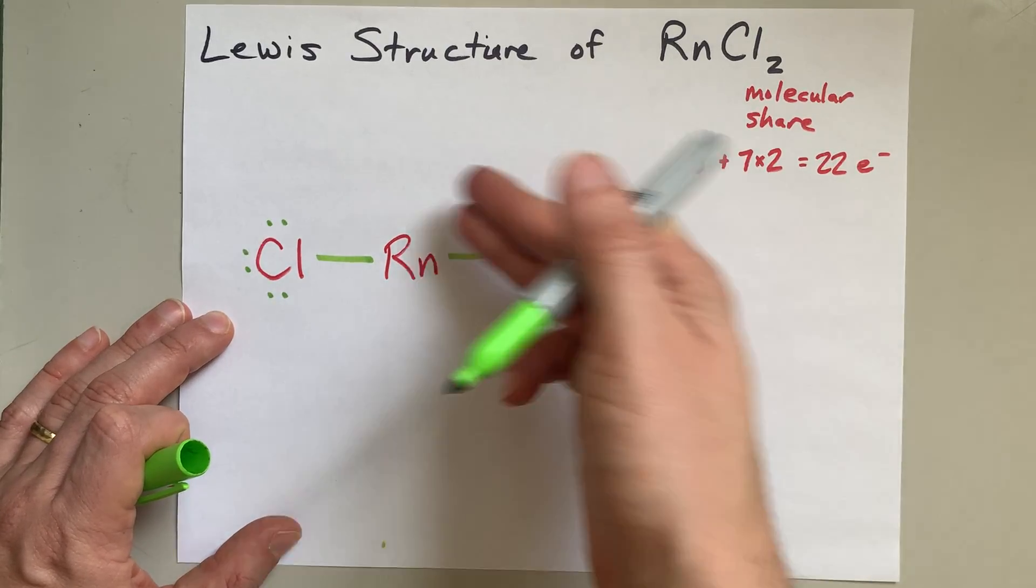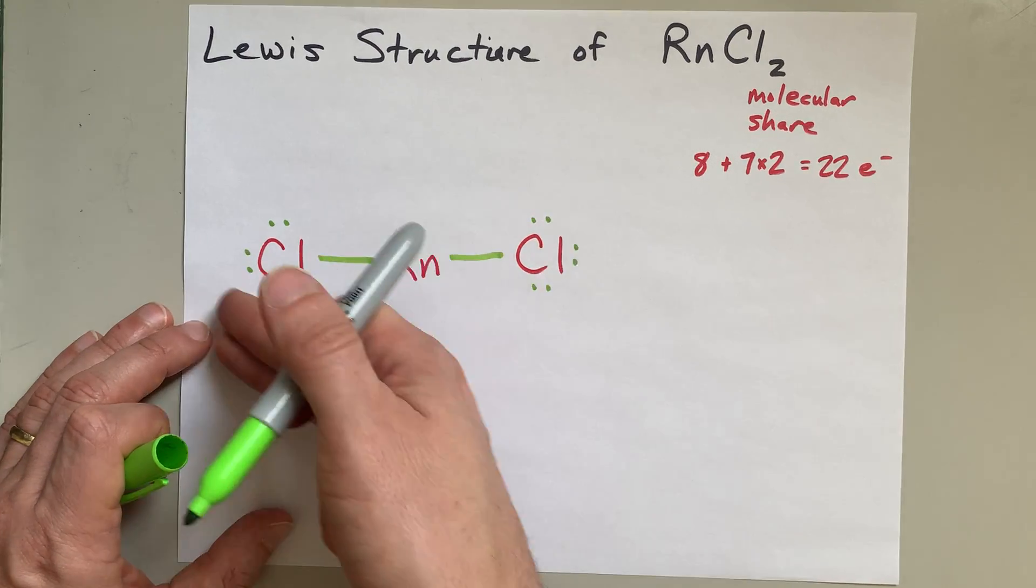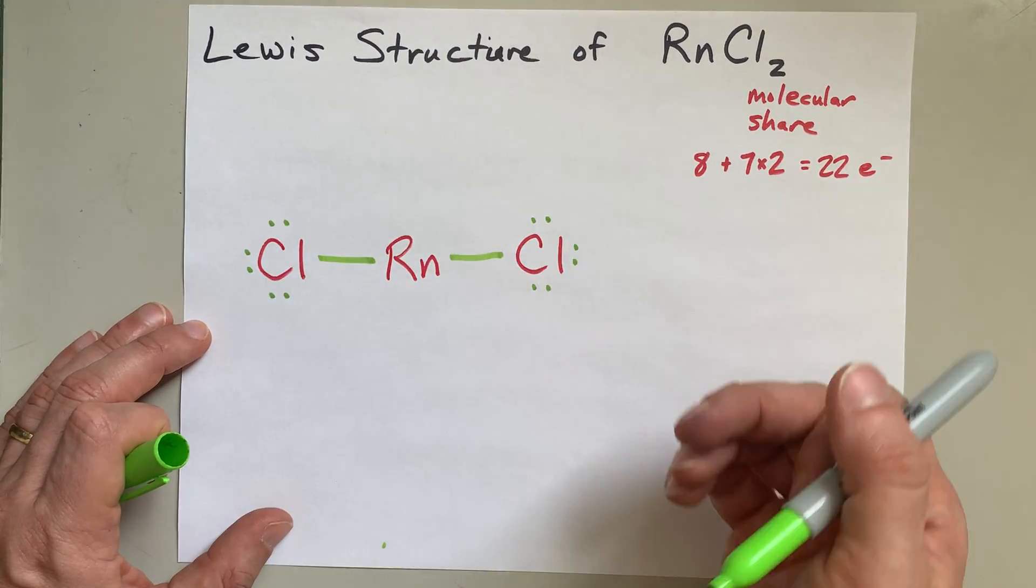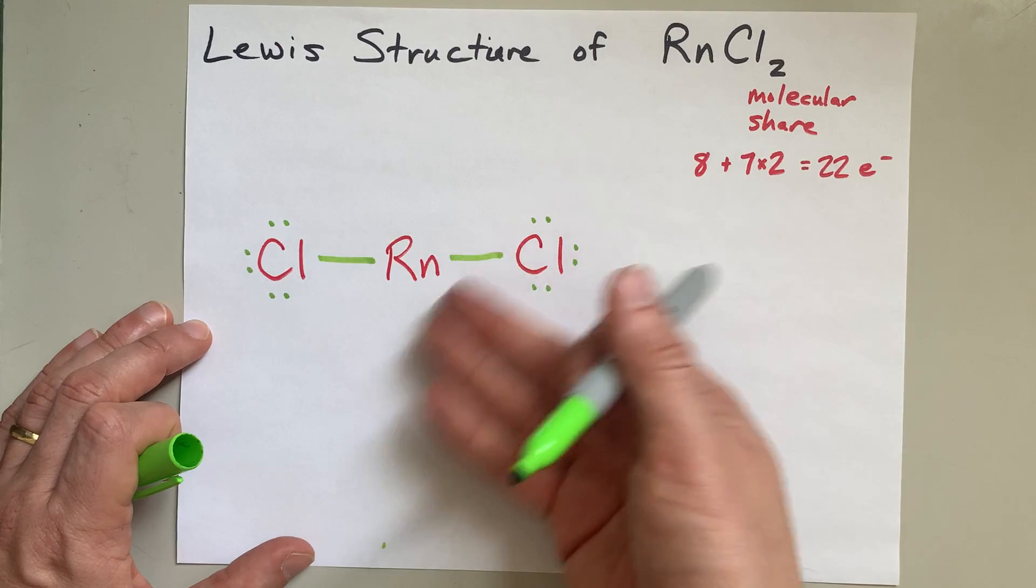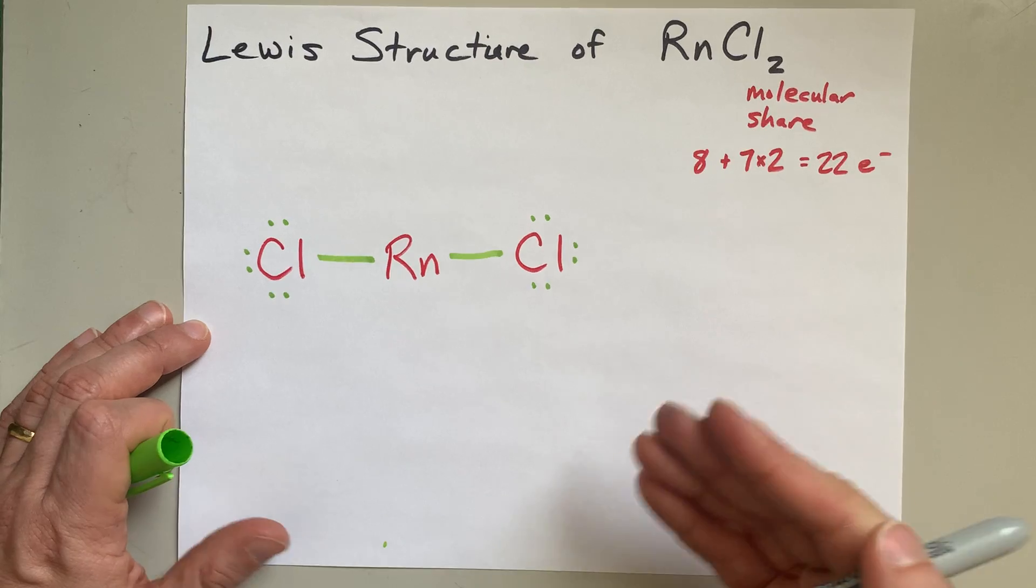That completes the octet on each of the outer atoms. This chlorine has 8 electrons around it. This chlorine has 8 electrons around it. But I've only dealt with 16 electrons so far, and I need 22. I'm missing 6 of them.